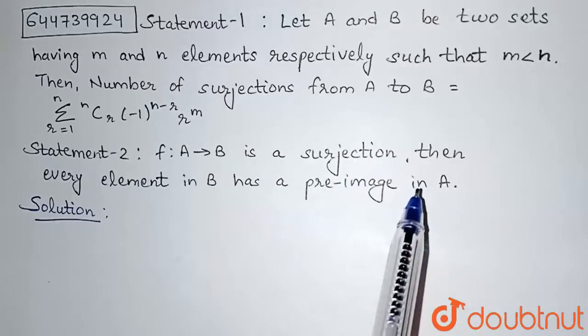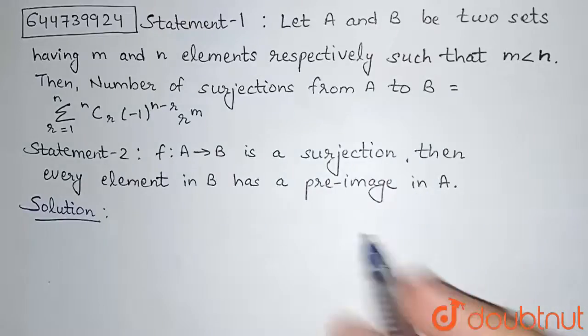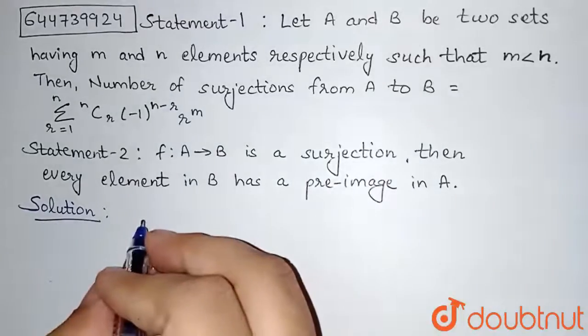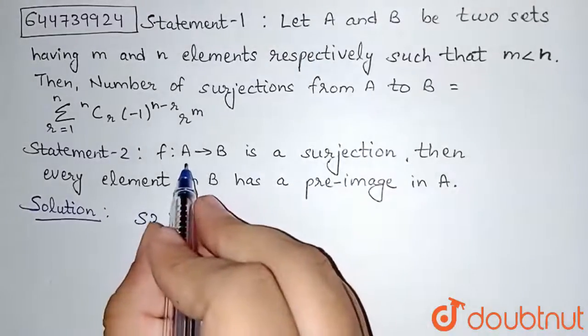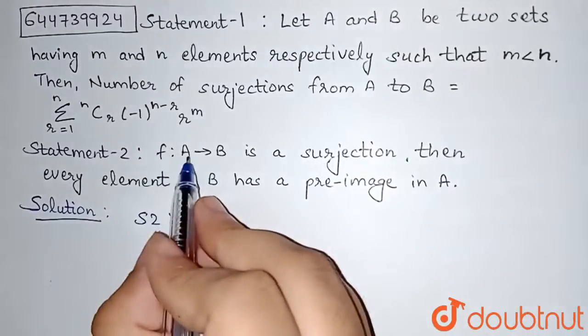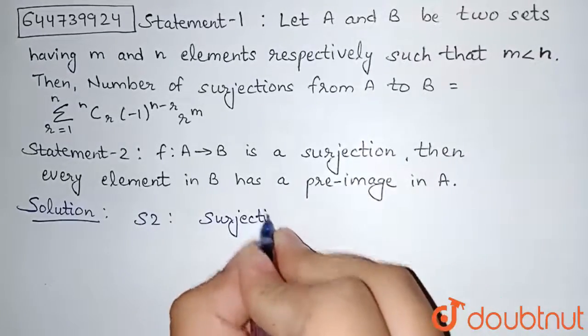So here in this question, we are given two statements 1 and 2 and we need to identify whether these are true or false. So here if I start with statement 2 first, so what we are given that a function from A to B is a surjection. So first of all, what is the meaning of surjective function?